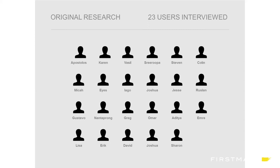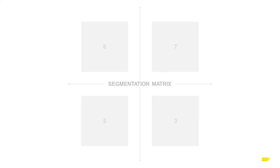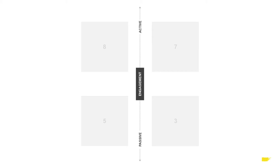For that particular survey, we interviewed roughly 23 users. What I did was plot these users in a segmentation matrix. The segmentation matrix was based on level of experience — going from novice to intermediate, since an advanced user is probably not the most targeted type. The other axis was based on engagement from passive to active, creating the framework for our user segmentation.